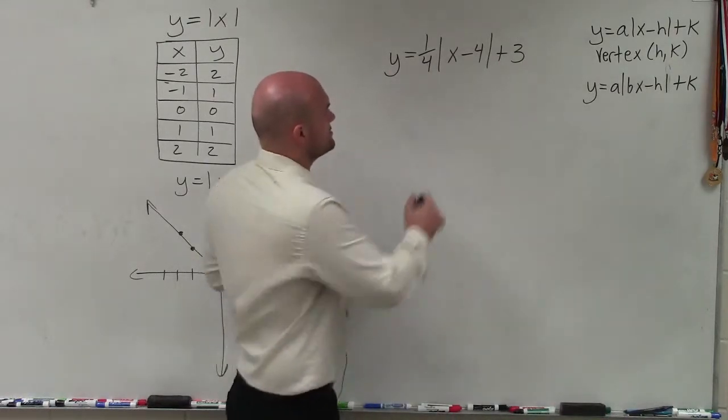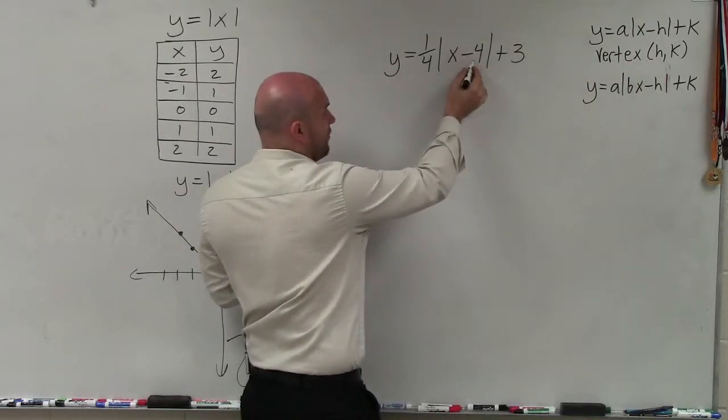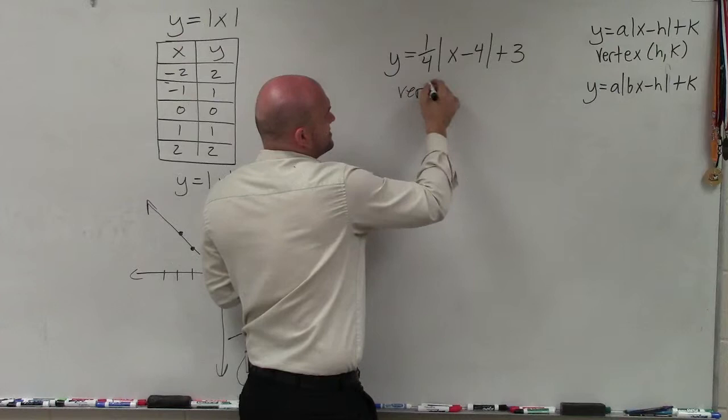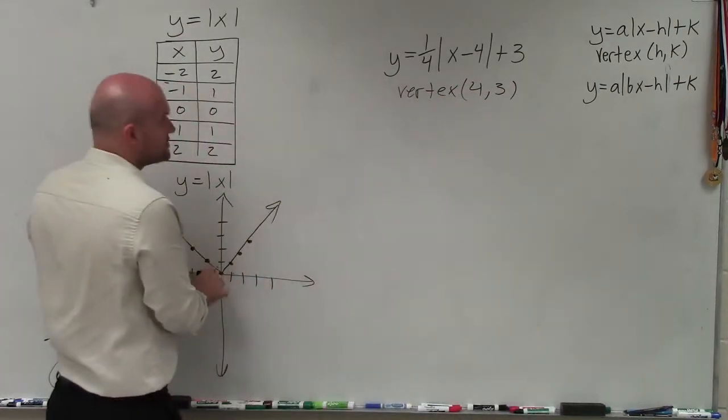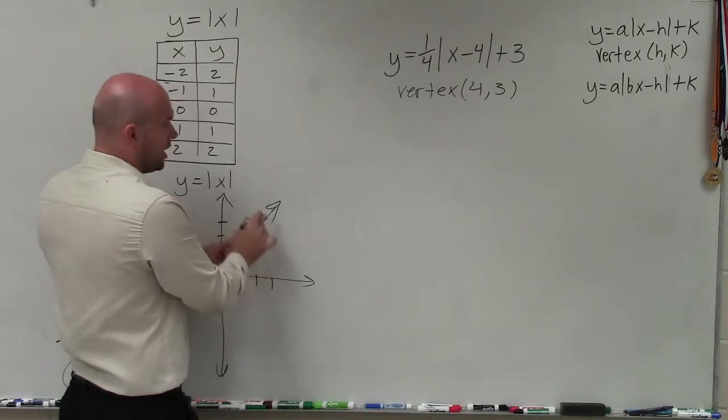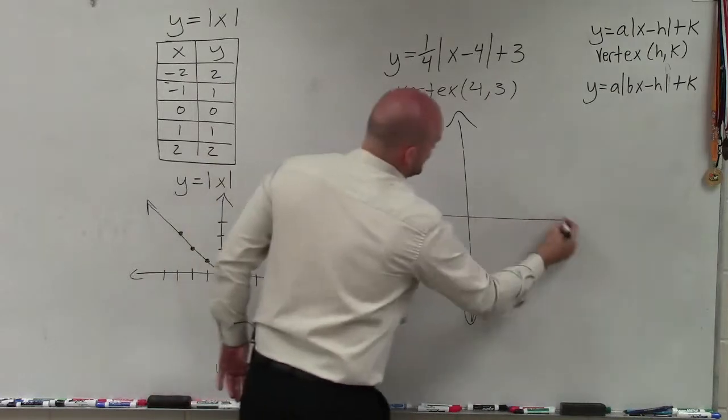We'll forget about the one-fourth for a second. So remember, it's x opposite of h. So x opposite of 4 here is going to give us a vertex of 4, 3. That means instead of my vertex being at 0, 0, it's now going to be over 4 up 3. So I'm shifting my graph 4 units to the right and 3 units up.